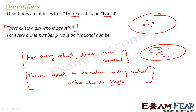So you can say 'there exists a teacher in your school who teaches maths.' You can't say 'for every teacher in your school, the teacher teaches maths,' because that's not correct — some teachers teach maths, some may not. But 'for every school there are students' is true. So the concept is: when you say 'there exists,' some elements in the set are true for the statement; when you say 'for every,' all elements in the set are true.